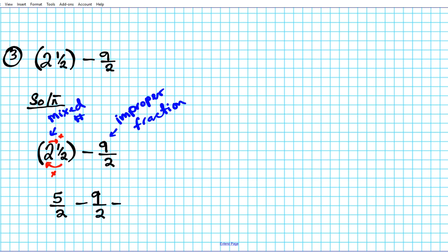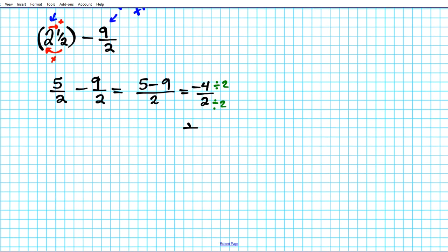So you subtract the numerators and keep the denominator. Five minus nine gives us negative four over two. We can reduce this by finding the greatest common factor of negative four and two, which is two. Dividing top and bottom by two gives us negative two over one, and any number divided by one is that number, so negative two is the final answer for question number three.